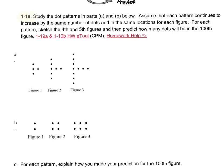Problem 1-19. Study the dot patterns in parts A and B below. Assume that each pattern continues to increase by the same number of dots and in the same locations for each figure. For each pattern, sketch the fourth and the fifth figures and then predict how many dots will be in the hundredth figure.